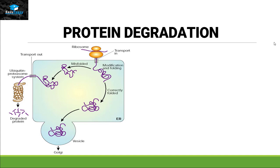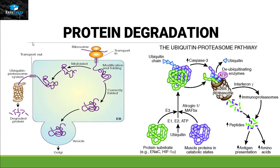Last but not least, protein degradation is also a post-translational process. Sometimes protein translation is not done properly, and sometimes external factors damage the protein. In that case, the protein will undergo degradation. Degradation occurs when a ubiquitin chain attaches itself to that protein. As you can see in this picture, the ubiquitin chain attaches to the damaged proteins, giving signals to the proteasome to recognize them. Once the ubiquitin chain is attached, the proteasome comes and degrades that protein into amino acids, and the protein loses its function.